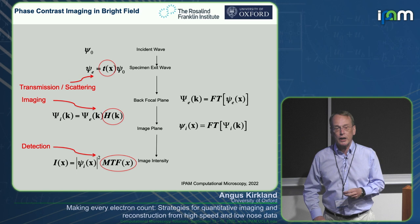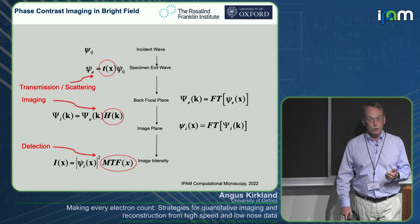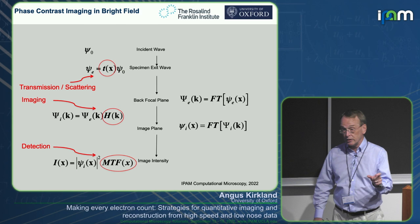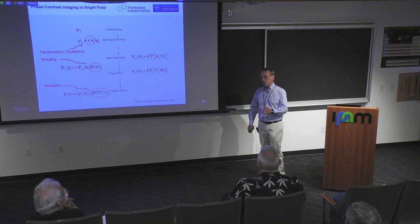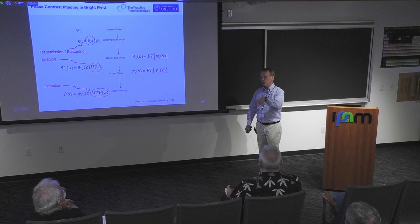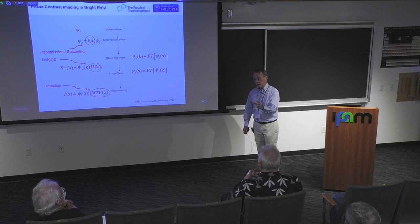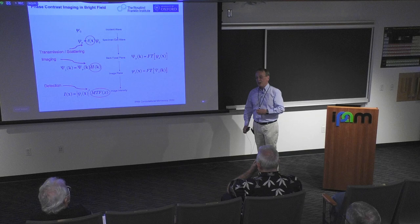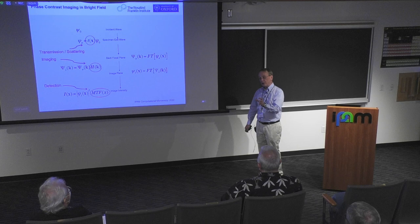Modern electron detectors are capable of single electron counting, but they cause blurring due to the spreading of fast electrons in the silicon. The blurring kernel is known — it's not a pure Gaussian, but a hybrid of a Poisson distribution with a long tail. You can model it by computing scattering of the fast electron through silicon and integrating over all paths. Unfortunately it's not a well-defined analytical function.